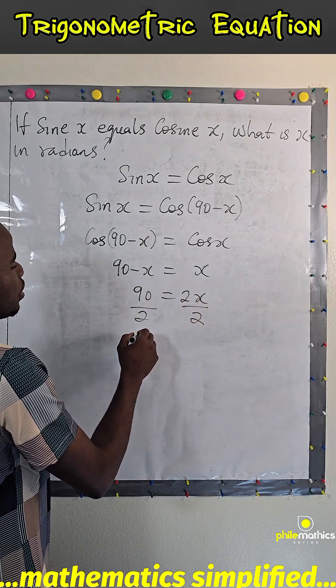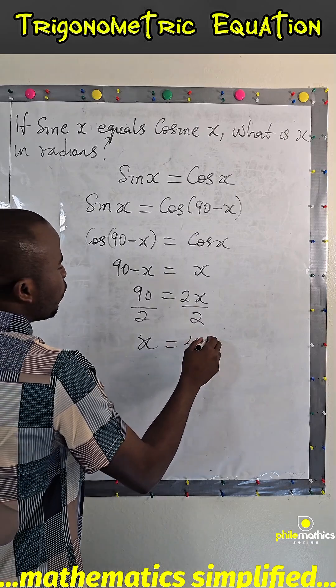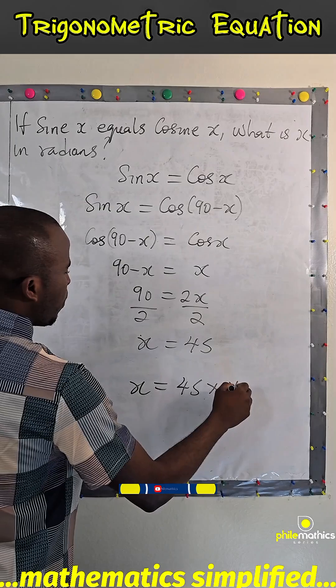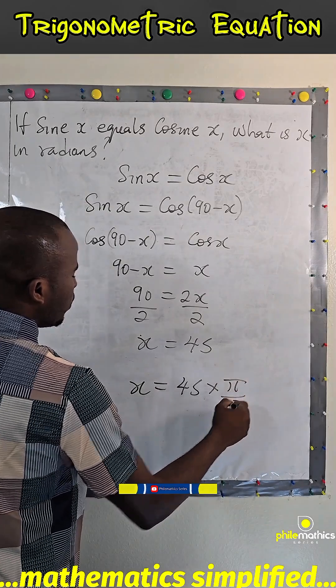To have that x will be 45. In radians, we multiply 45 times pi over 180 degrees.